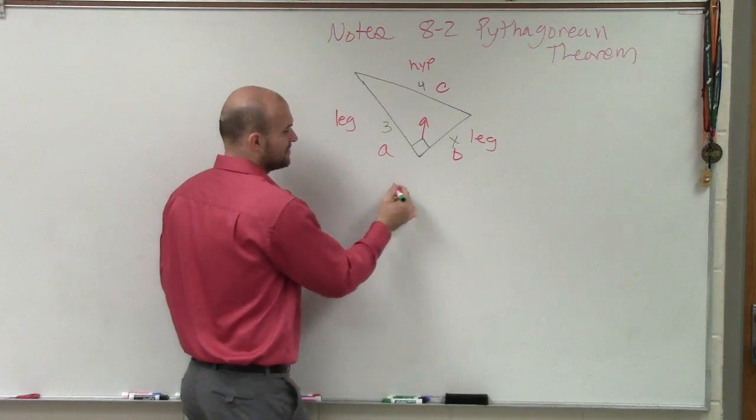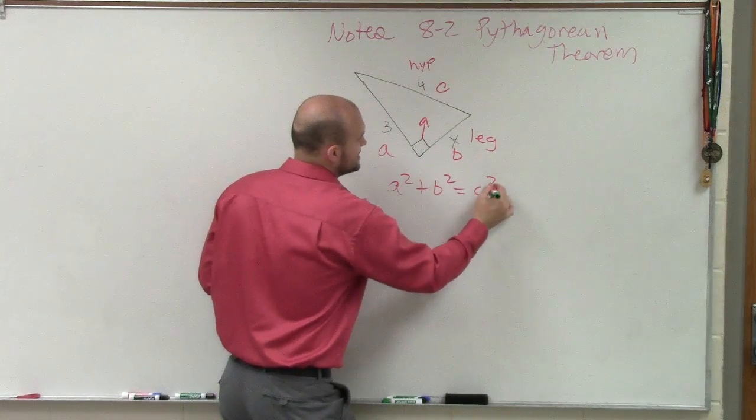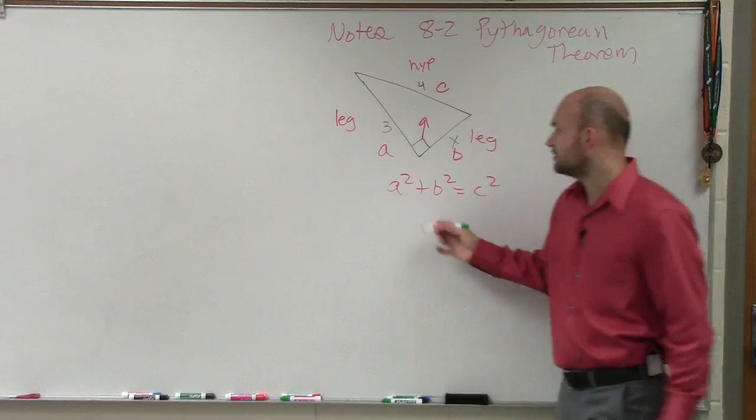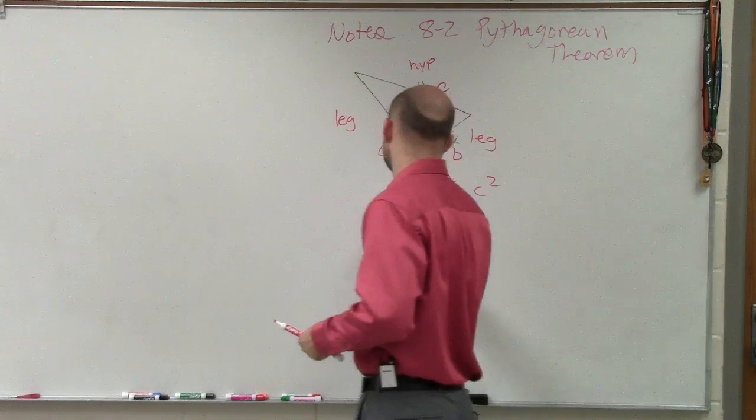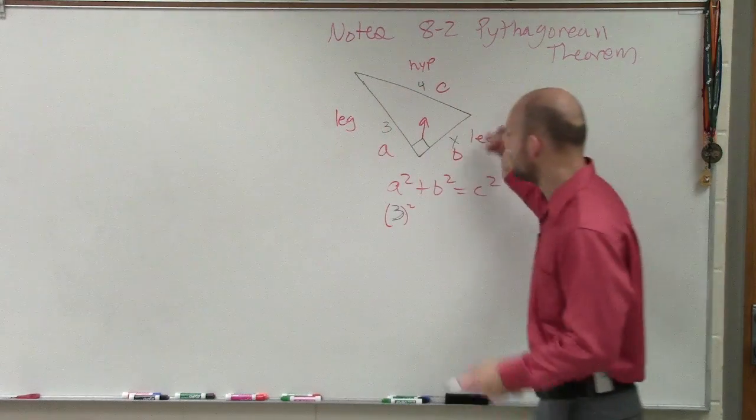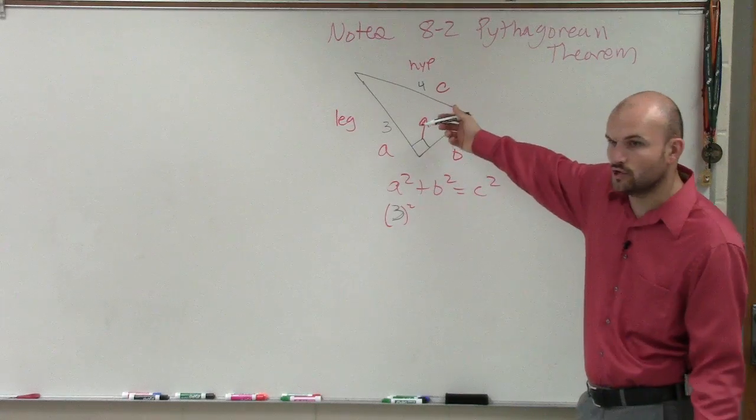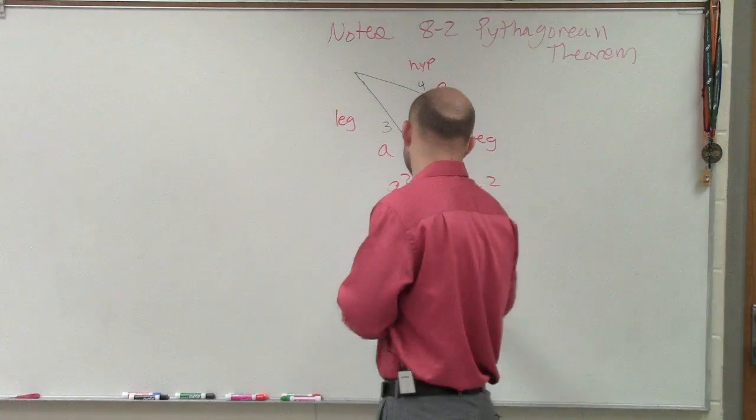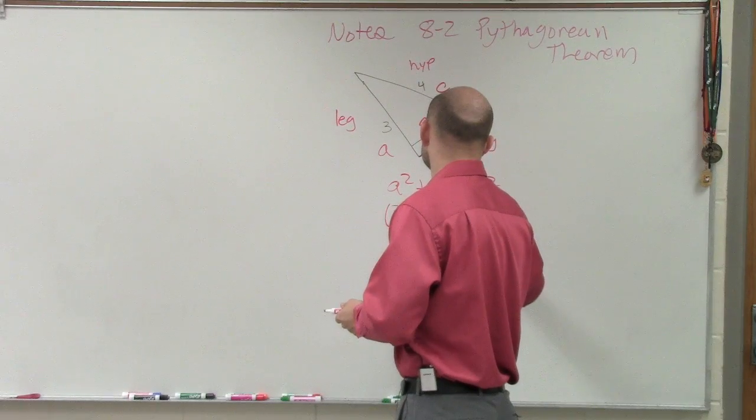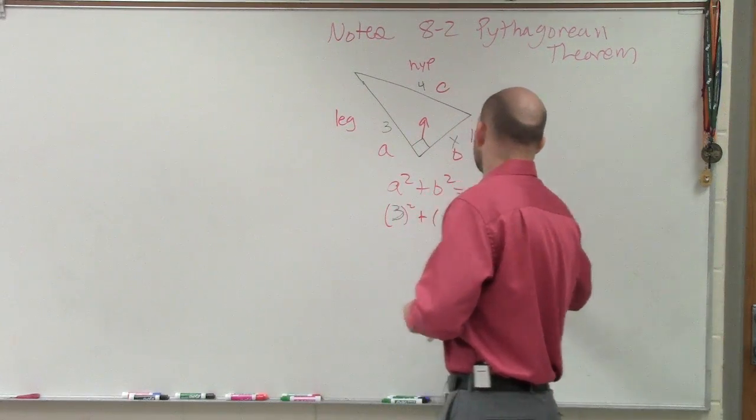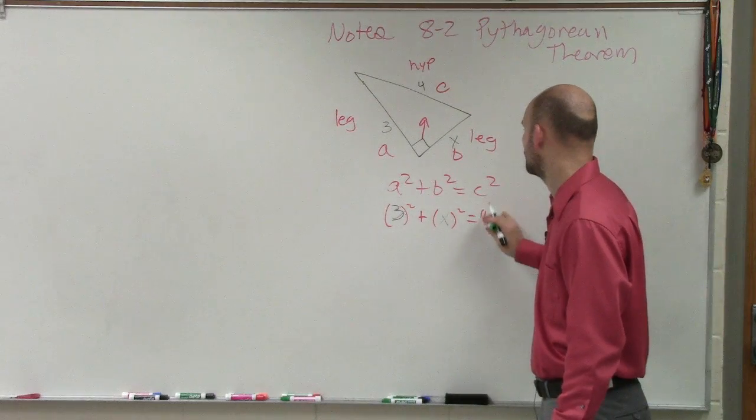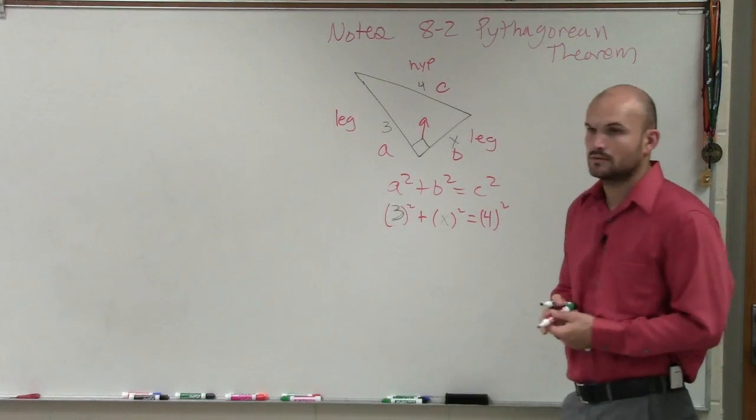So if we go through the Pythagorean theorem, which is a squared plus b squared equals c squared. And then I just look at this. I say, well, a squared, that's going to be 3 squared. b squared is actually x. We don't know the value of that. And then c squared is going to equal 4.